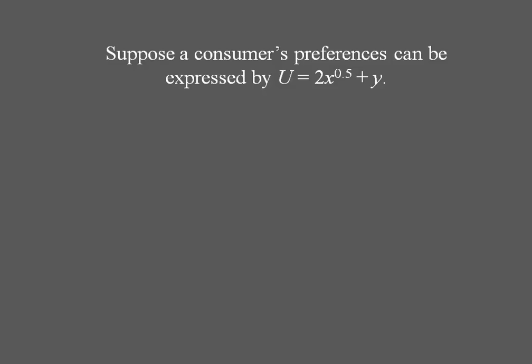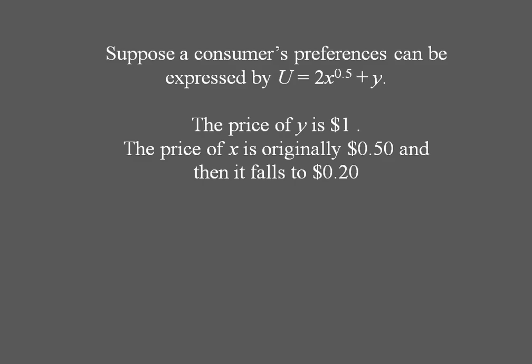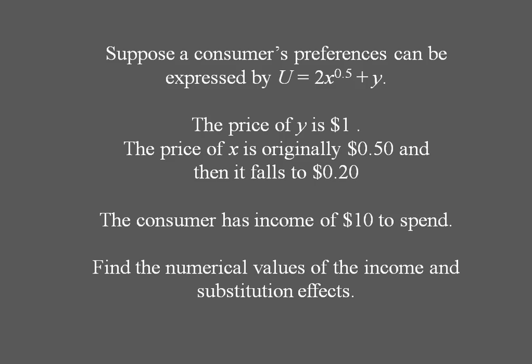So here we have some quasi-linear preferences, 2 times x to the 0.5 plus y. Let's let y be a dollar and x start at 50 cents and fall to 20 cents and give this consumer $10 in income. Let's find the numerical values of the income and substitution effects.